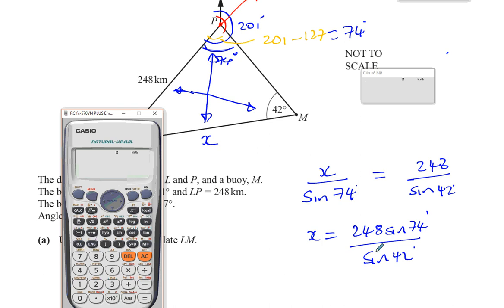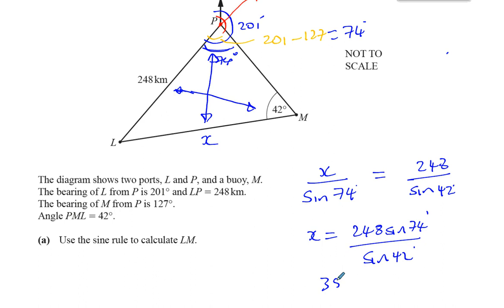We can take out our trusted calculator. Let's hope it doesn't crash this time. We're going to have 248, sine 74, divided by sine 42. Always check to see if it's in degree mode. I also teach AS and A-level math, so sometimes my calculator is in other modes, like radian mode. So I always check. It's always a good idea to check just in case somebody wanted to mess up your exam or something before your exam and changed it for you. So 248 sine 74 over sine 42 equals 356.272.